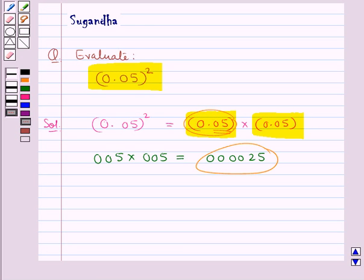So we will place decimal places in the product such that the decimal places in the product would be equal to 4. So we will place the decimal here because in this case the decimal places would be equal to 4.